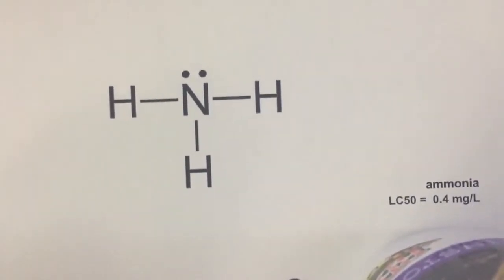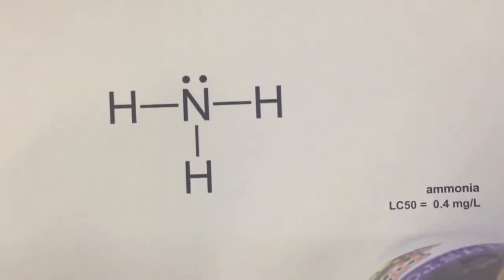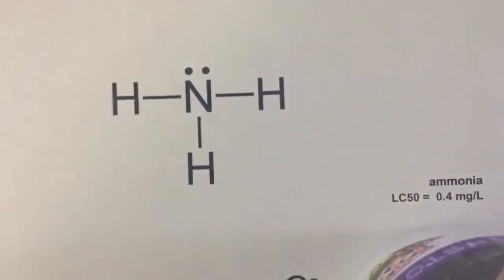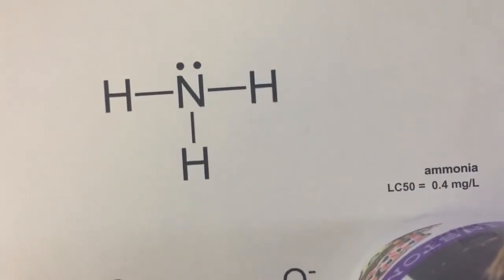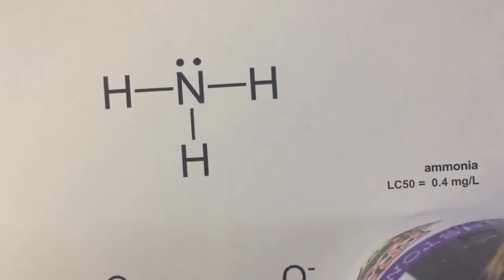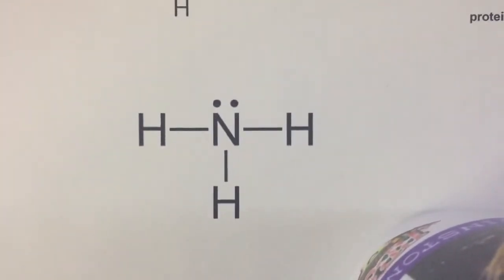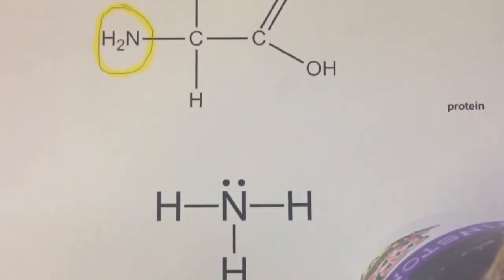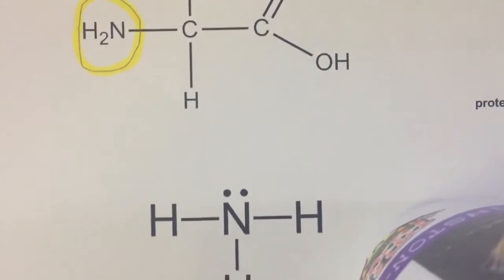There are two major strategies for how to get ammonia out of your water. One strategy uses nitrosomonas bacteria, which will convert ammonia to a less toxic compound that can be removed with water changes. The second strategy uses aquatic plants to go from ammonia back to protein. The growth of aquatic plants — new leaves and stems — uses this nitrogen to make new protein. I'll talk about both strategies.